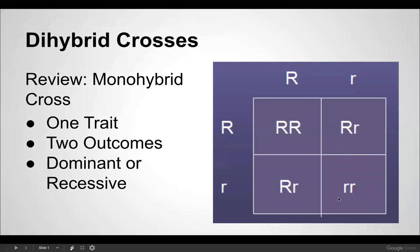Di-hybrid crosses are when we look at two traits, not just one. The monohybrid cross was the one trait. If you look here, the only trait that you see in the box is the R trait. So we are going to look at crosses where we can look at not only the R trait, but another trait as well. But this is just a review of the monohybrid.